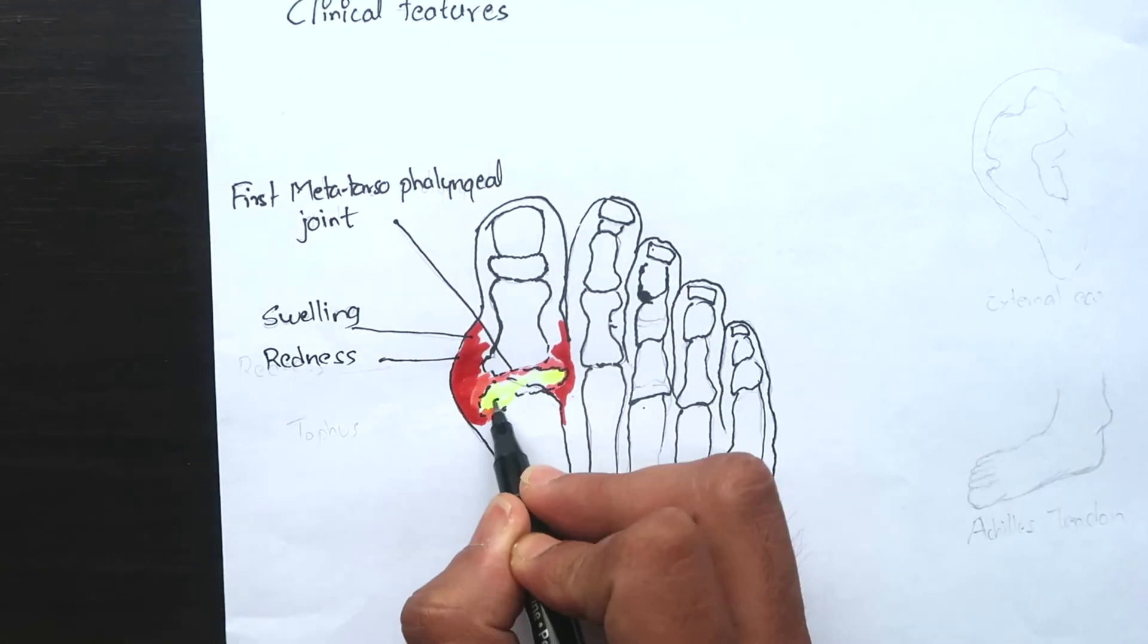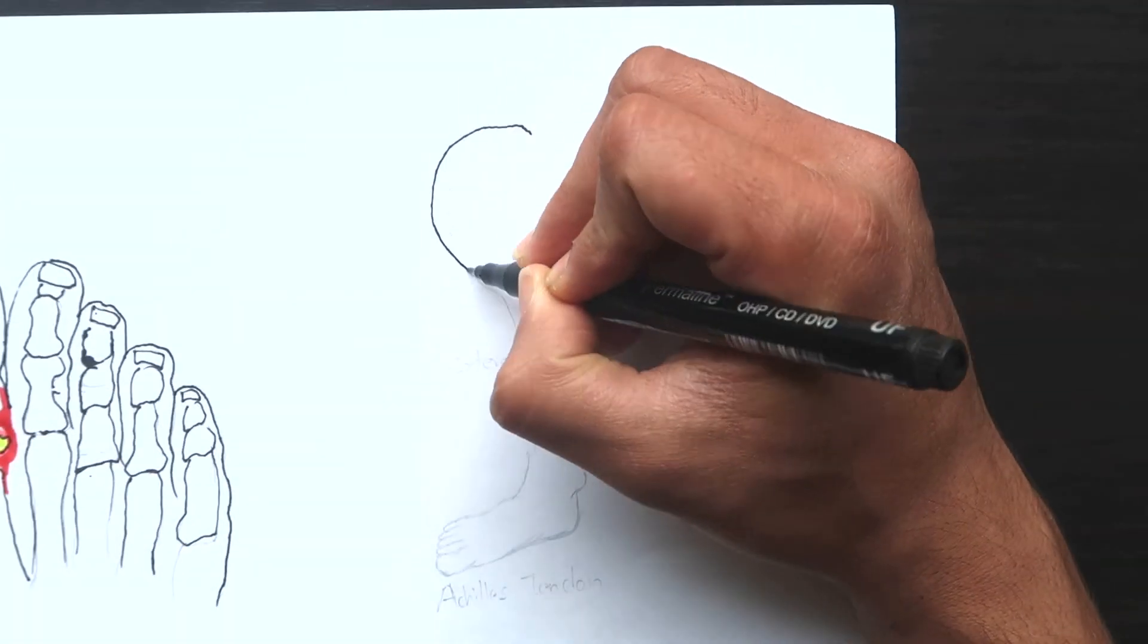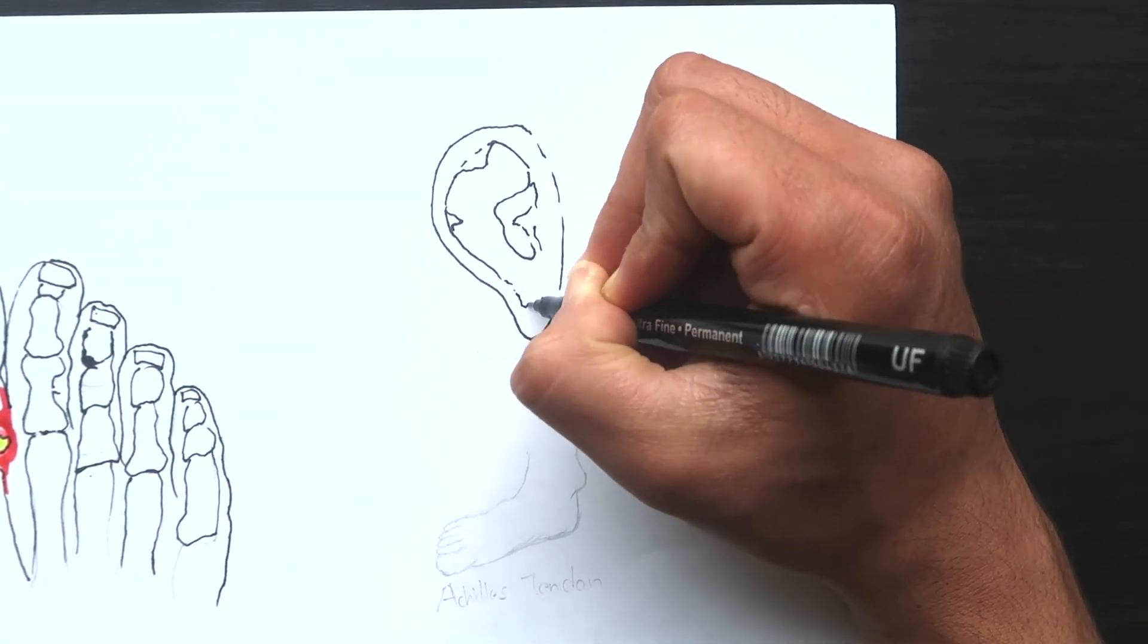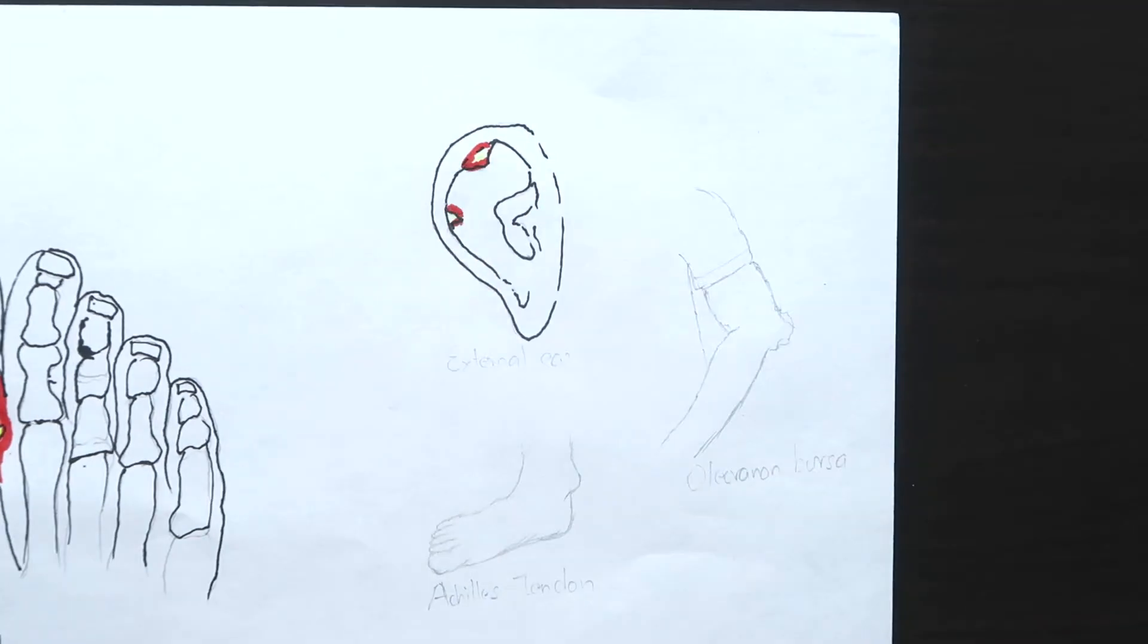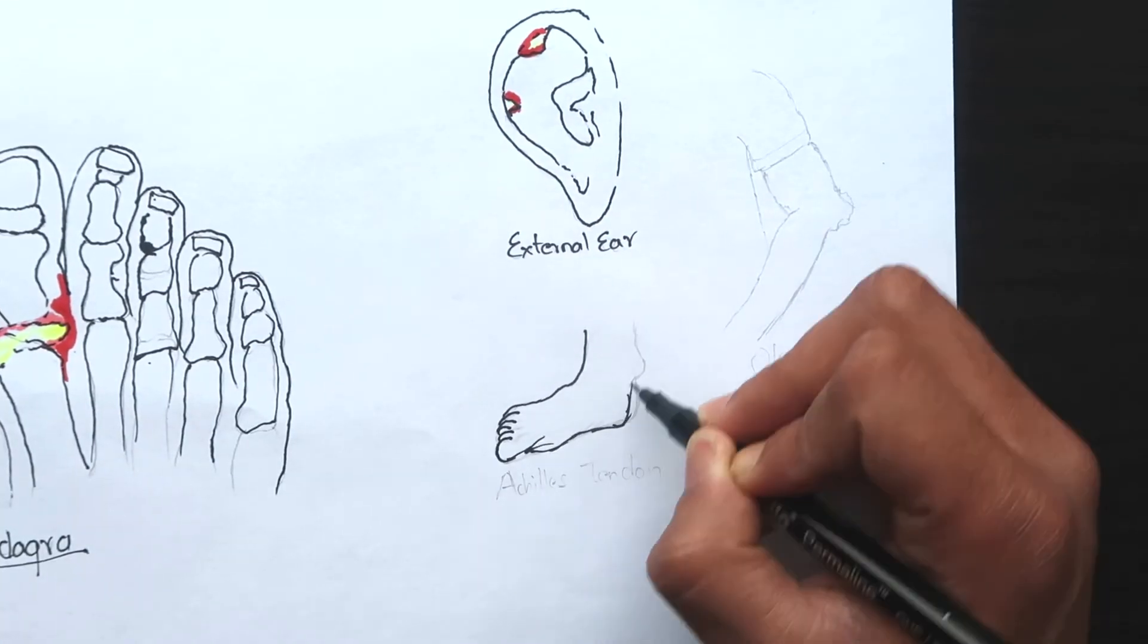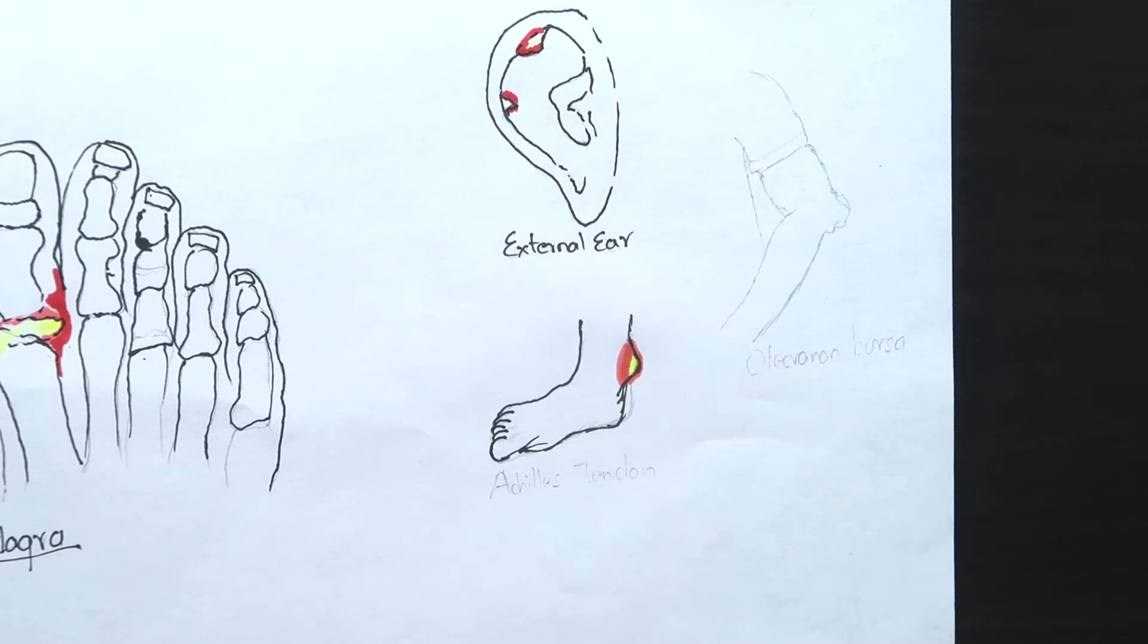Tophi are white colored nodules that are produced by the deposition of uric crystals in the joints and is also often seen in external ear, Achilles tendon and olecranon bursa.